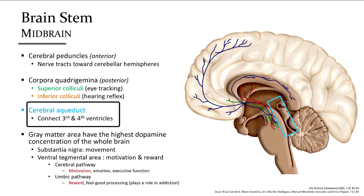Anteriorly within the midbrain are two gray matter regions: the substantia nigra and the ventral tegmental area. The substantia nigra plays a role in motor function — Parkinson's disease is associated with neuron death in this region, causing tremors and the distinctive walking movements of those patients. The ventral tegmental area is associated with pathways leading into the cerebrum that play a role in emotions, feeling good, and reward patterning. These two regions contain the highest concentration of dopamine in the entire brain.